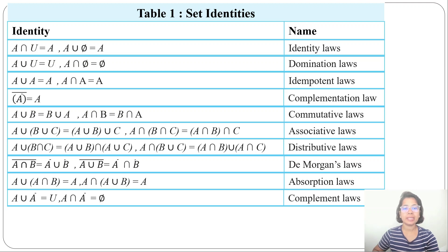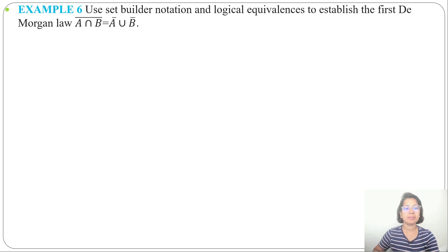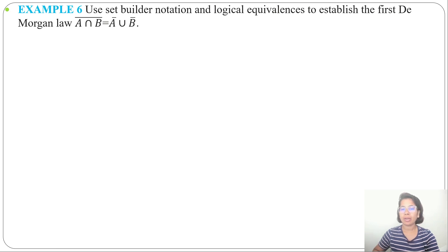In the previous lecture I discussed set identities. Today I will discuss some examples. Example 6 uses set builder notation and logical equivalence to establish the first De Morgan's law: (A ∩ B)' = A' ∪ B'. I already discussed we can represent a set in two ways — one is roster method where we list out all the elements, and another is set builder notation where we write the properties.